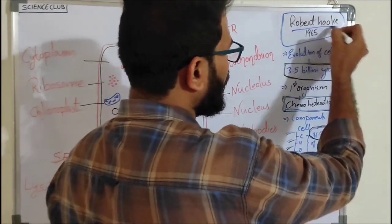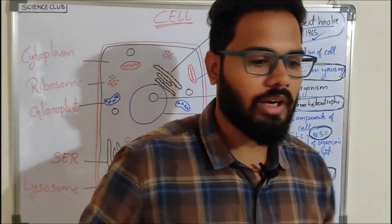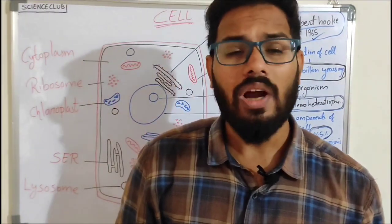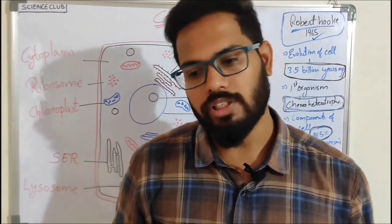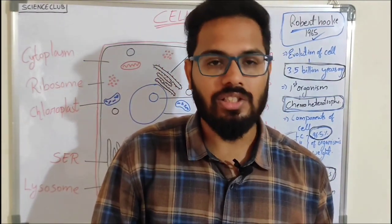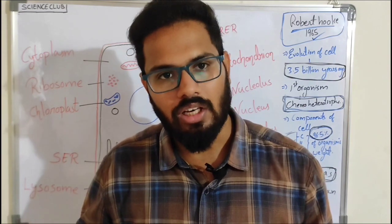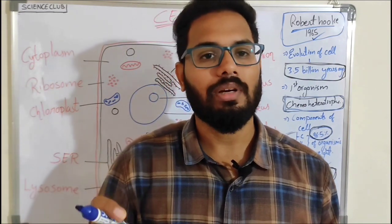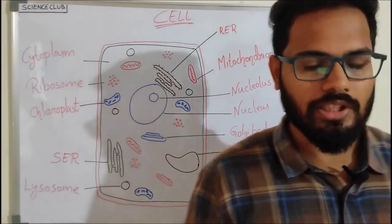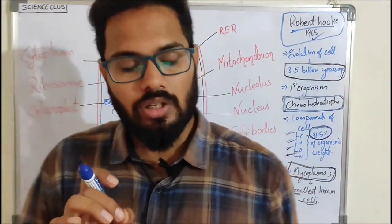Who discovered the cell? The cell was first discovered by Robert Hooke in 1665. What is cell biology? The study of cells, from the basic structure to the function of every cell organelle, is known as cell biology.